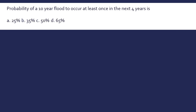Now I will discuss a few problems so the concept will be very clear. The first problem: find the probability of a 10-year flood occurring at least once in the next 4 years. Here, a 10-year flood means T = 10 years, and we want the flood to occur at least once in the next 4 years, so n = 4.